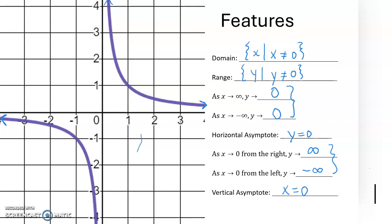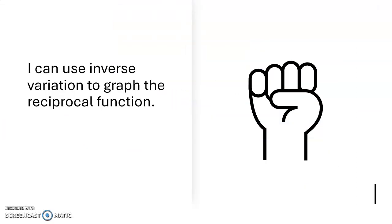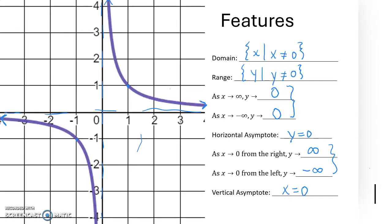When graphing this function, the first thing you should do is plot those asymptotes. Then go to the points (1, 1) and (−1, −1) because each is the reciprocal of itself, and then sketch those hyperbola shapes approaching the asymptotes. You should be confident graphing the reciprocal function either by plotting points or by sketching from the asymptotes.